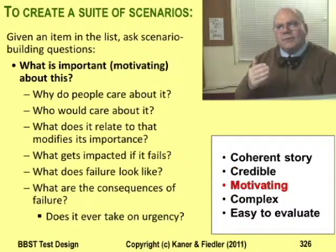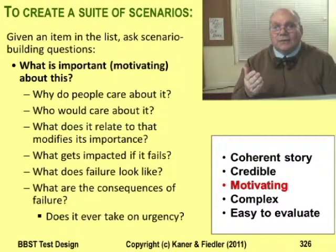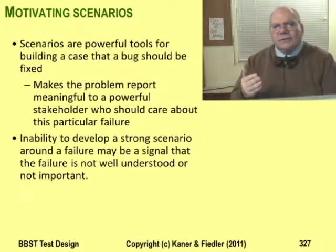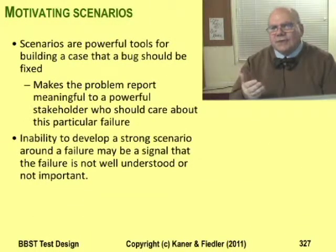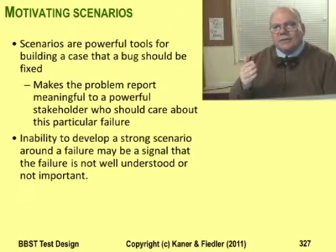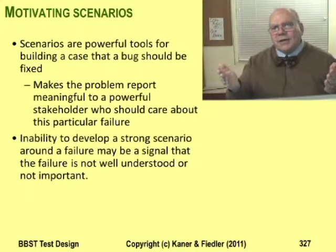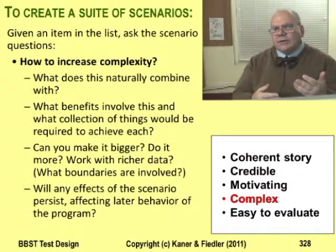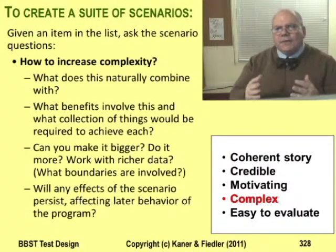A story is motivating if someone important thinks the program should pass this test. So when you craft your story, you have to think about what details have to be included to make it motivating. As part of making the story motivating, sometimes you target a specific stakeholder. Think back to the postage stamp bug — the PageMaker tests were all focused on the marketing manager, the guy who wanted to make public comparisons between PageMaker and our product, whose reputation was in trouble if the test didn't work. There are lots of ways to build meaningful complexity into a story. As you tell a story about how the program gets used, you naturally reach lots of features and lots of data values. A bunch of unrelated features or actions create a weak story, not a usefully complex one.